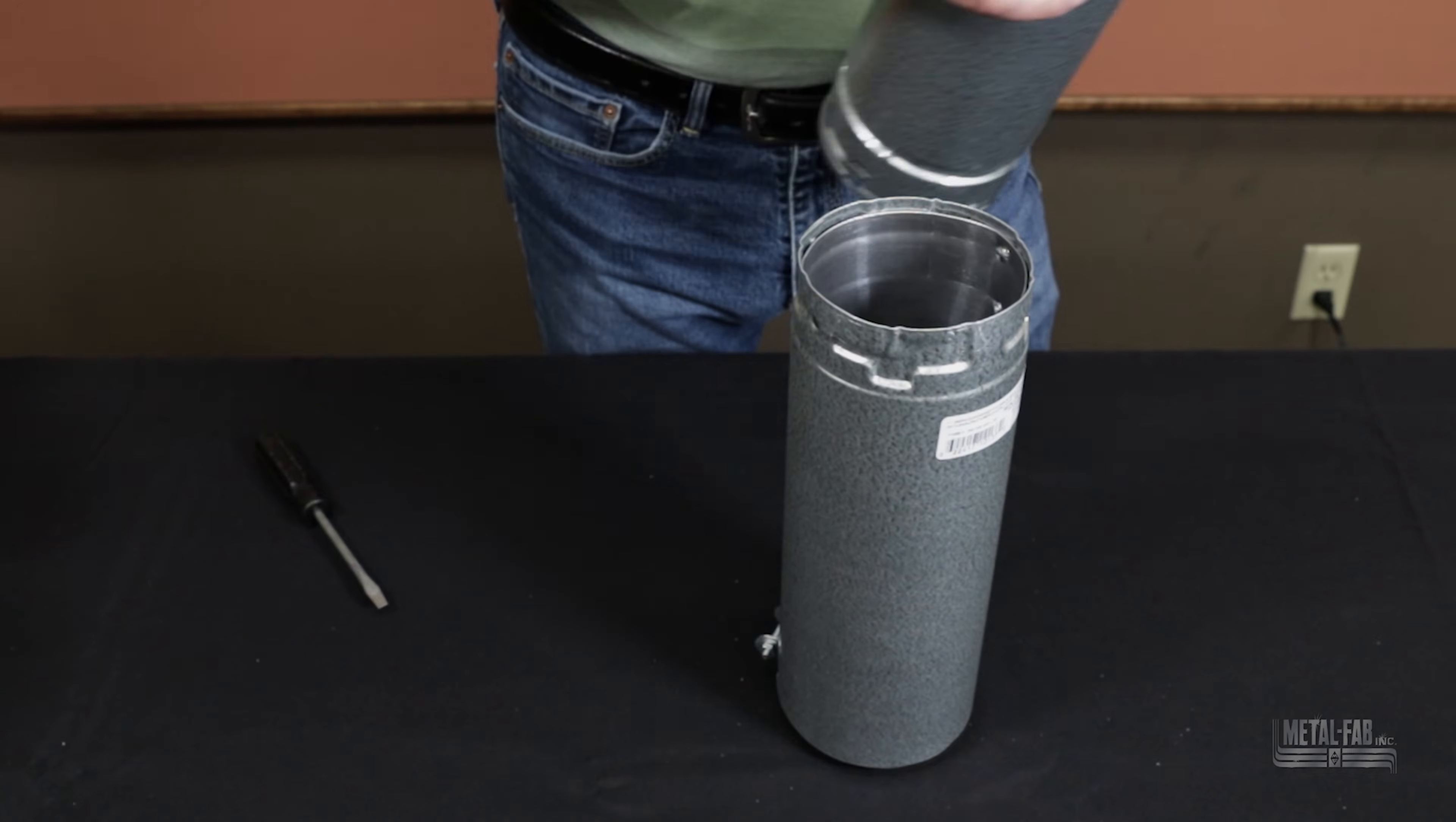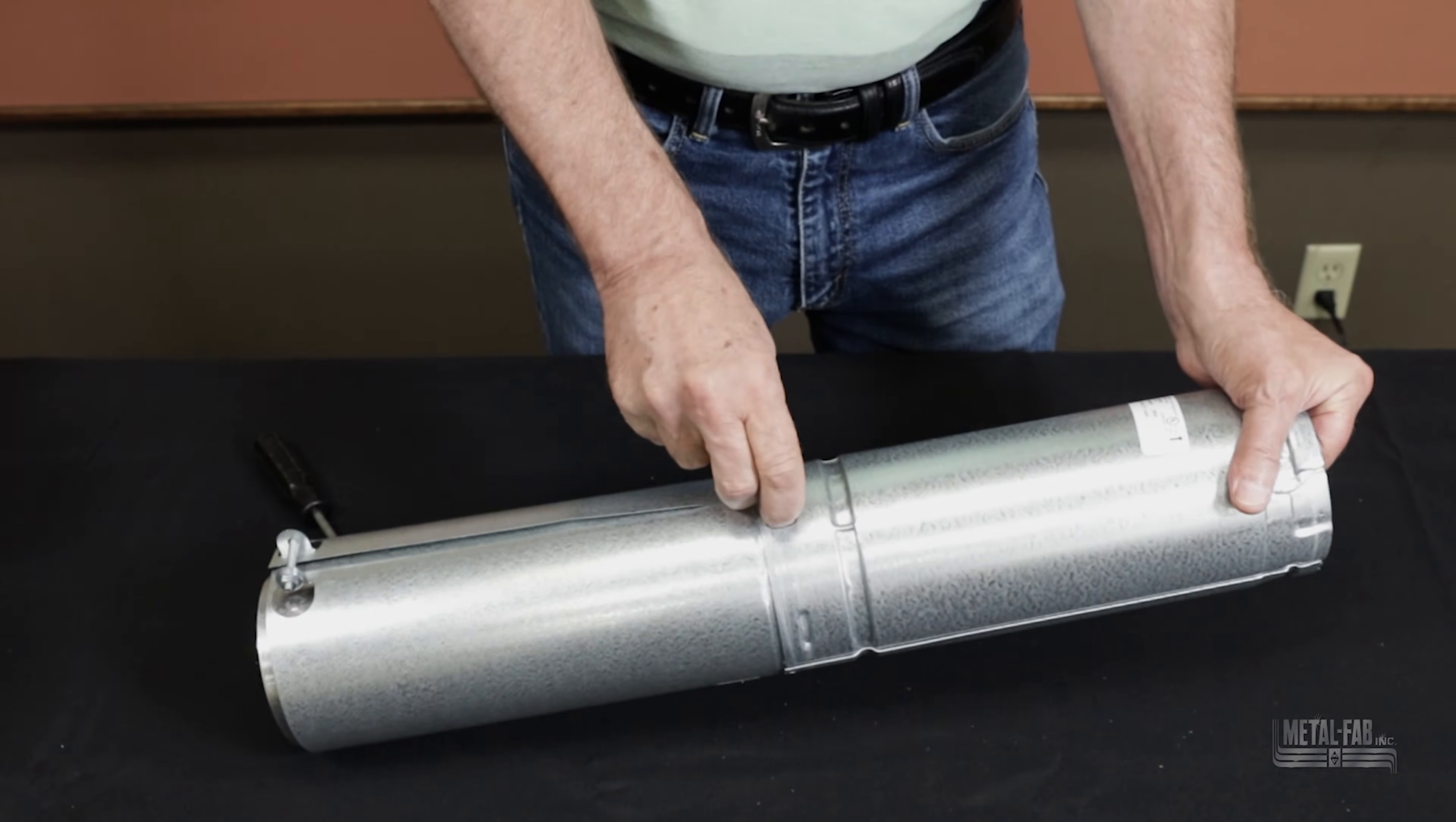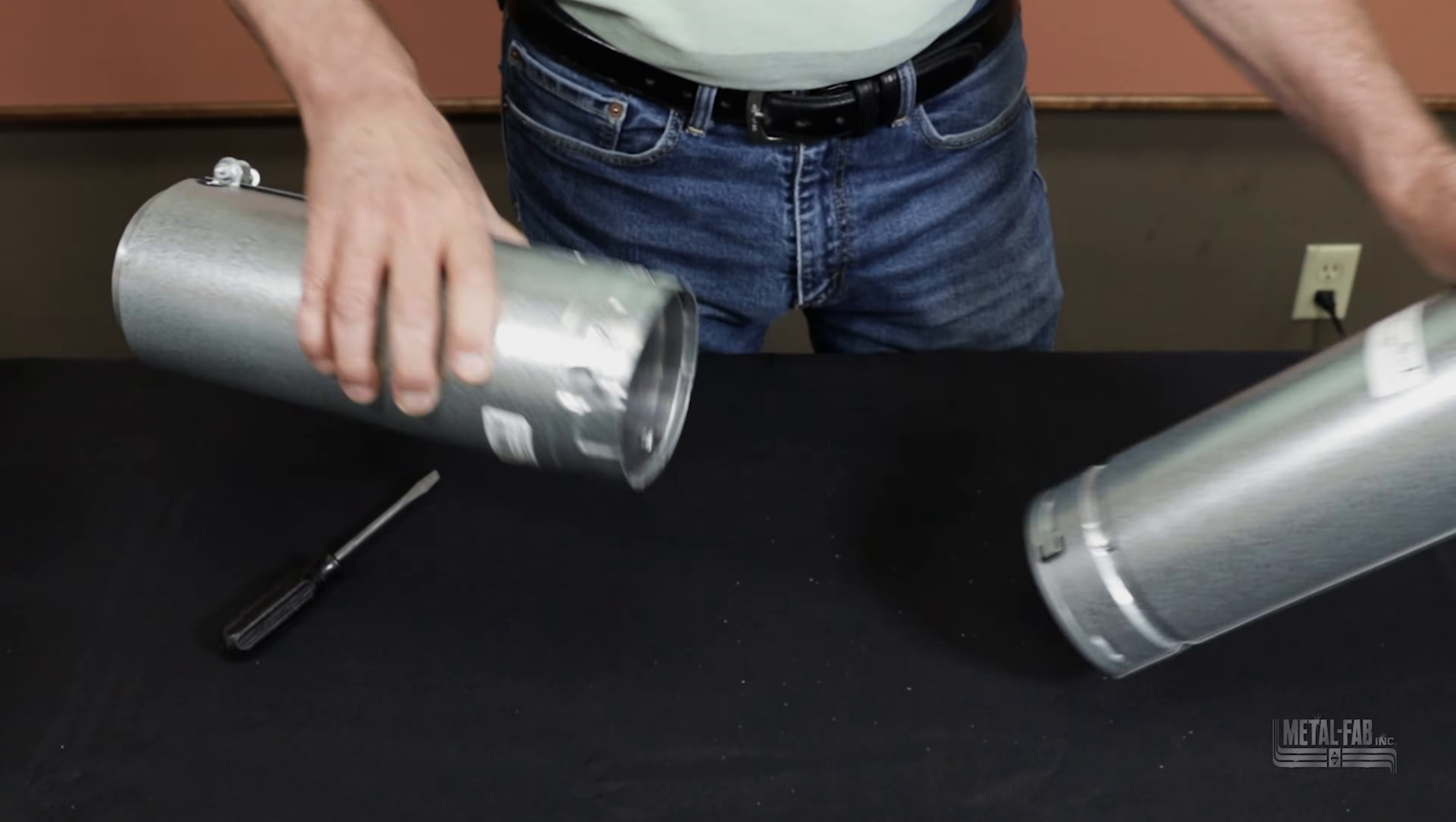So on the male end, it is our standard MetalFab B-Vent connection. You line it up, twist lock it, and put the Sherlock locking tab so it doesn't back off. And then if you ever do want to take it apart, you bend that Sherlock tab up. Now you can detach it.